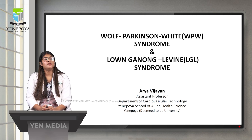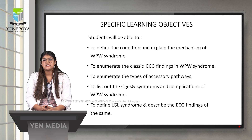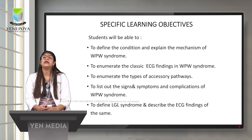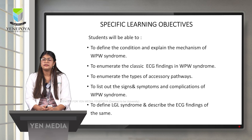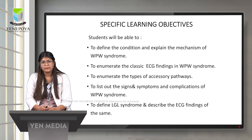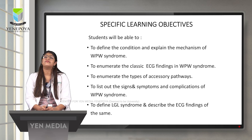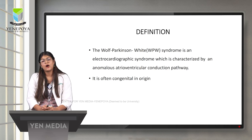Before we get into the class, let's go through the specific learning objectives. At the end of this session, students will be able to define and explain the mechanism of WPW syndrome, enumerate the classic ECG findings in WPW syndrome, enumerate the types of accessory pathways, list the signs and symptoms and complications of WPW syndrome, and define LGL syndrome and describe its ECG findings.